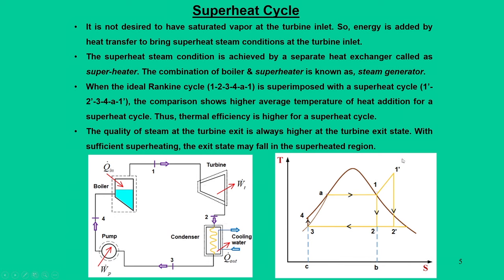We reach the region called the superheated region — where liquid plus vapor transitions to pure vapor. We call this superheated vapor. Once in this state, we expand the steam in the turbine from state 1, landing at exit condition 2 dash. The quality of 2 dash is greater than quality of 2, that is x₂' > x₂. Through this process, we solve the problem of turbine blade erosion.